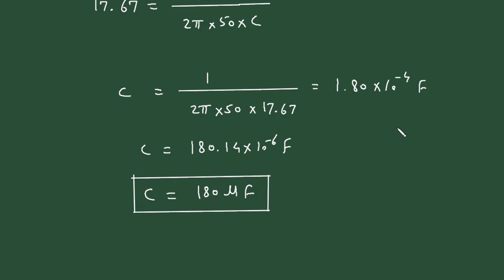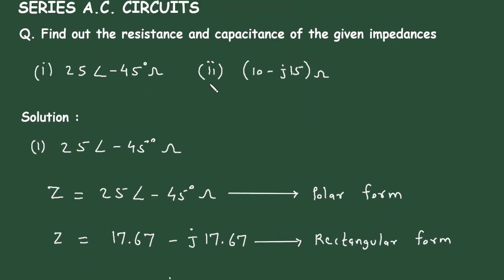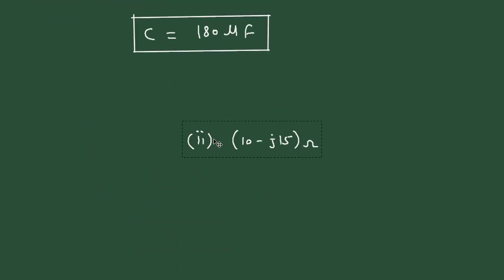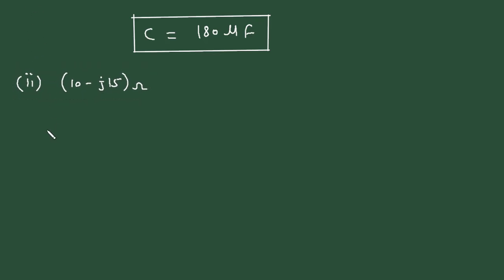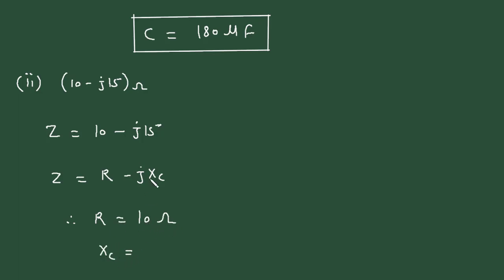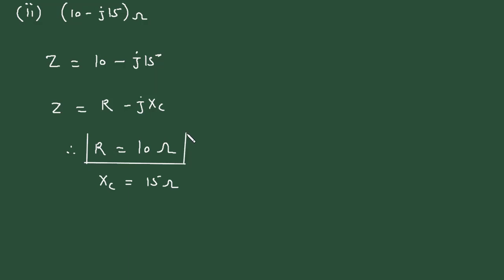Now we have the value of resistance and capacitance for problem 1. For the second problem, we have to find resistance and capacitance. Here Z = 10 − j15. Comparing with Z = R − j·XC, therefore R = 10 ohm and XC = 15 ohm. To find capacitance, XC = 1 / (2π·f·C).